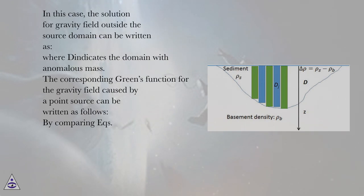In this case, the solution for gravity field outside the source domain can be written as. V indicates the domain with anomalous mass. The corresponding Green's function for the gravity field caused by a point source can be written as follows.